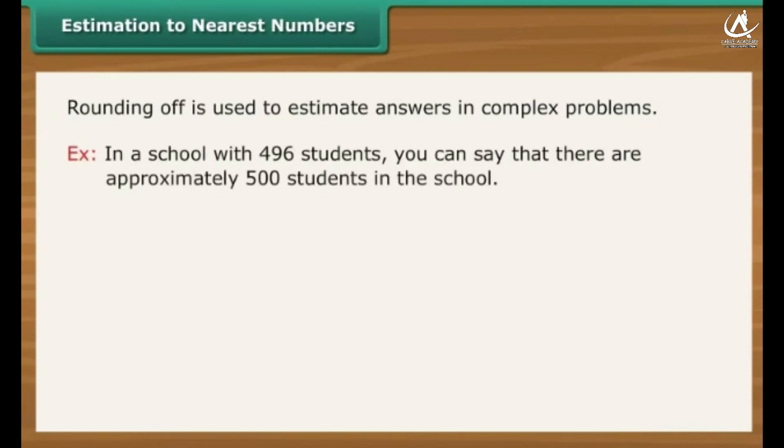Estimation to nearest numbers. As we come across large numbers, performing calculations on them becomes complex. To avoid the complexity, estimation or rounding off is used. For example, in a school with 496 students, you can say that there are approximately 500 students in the school.